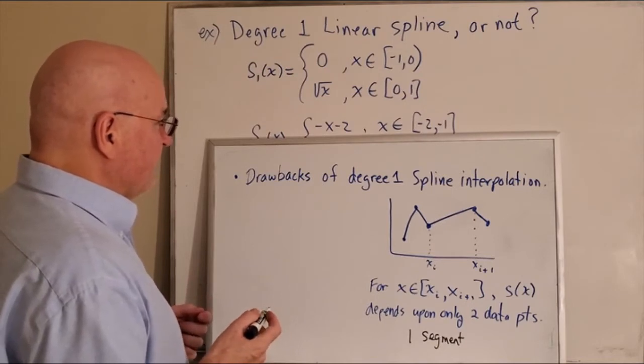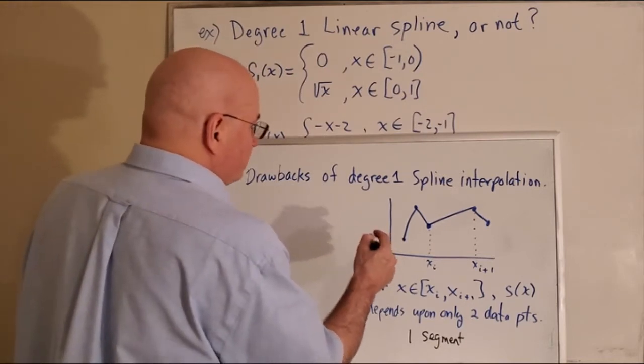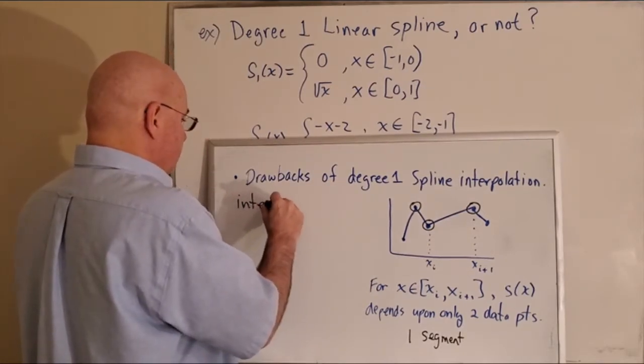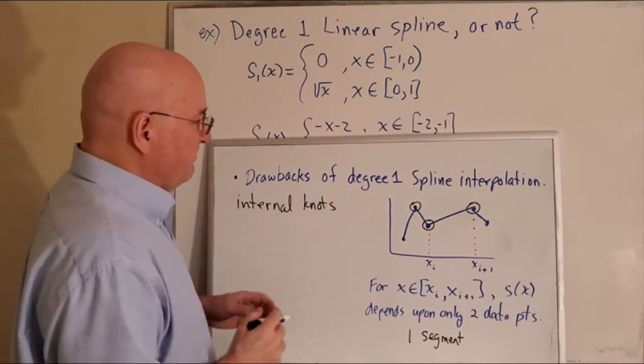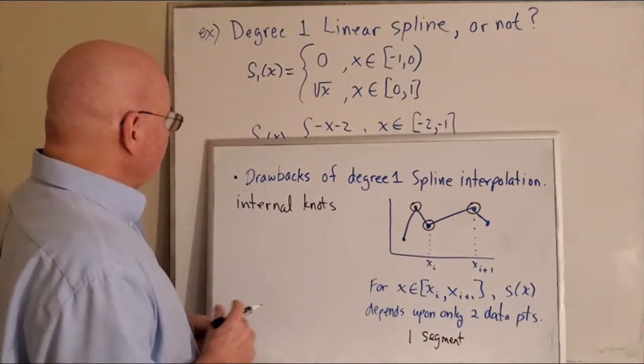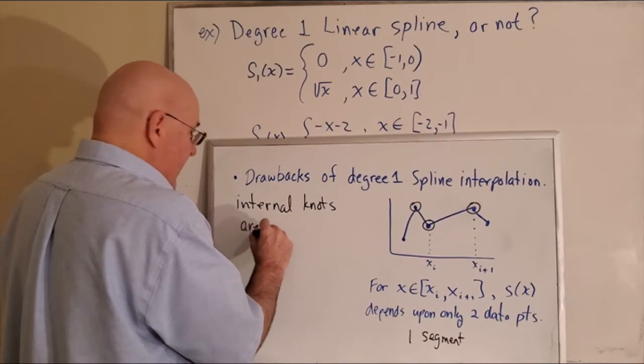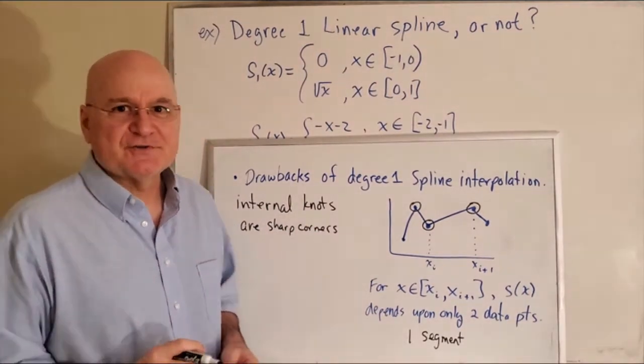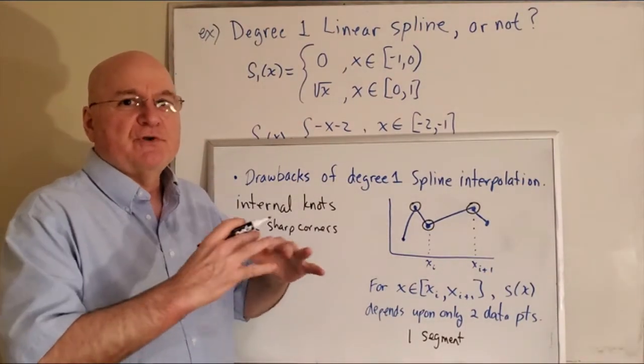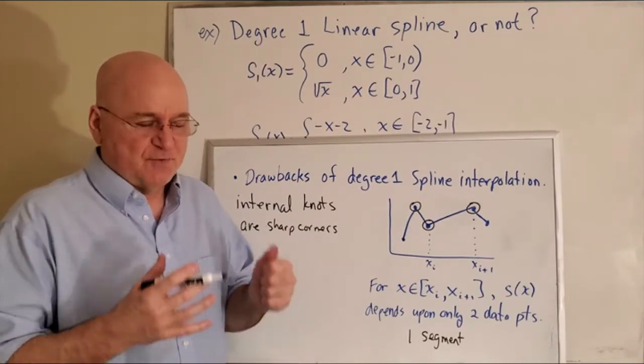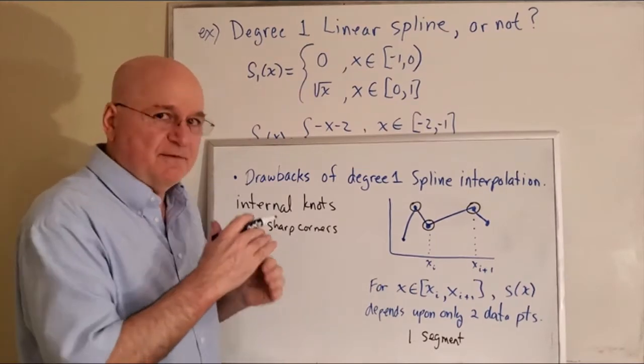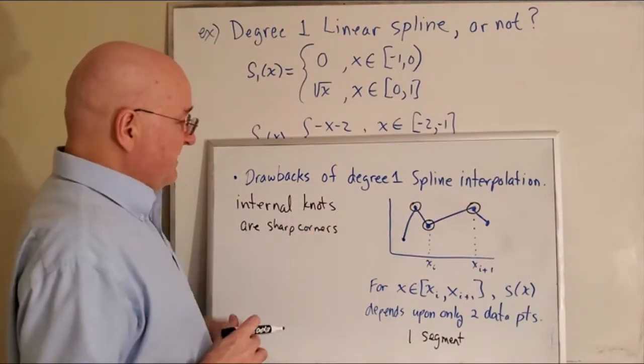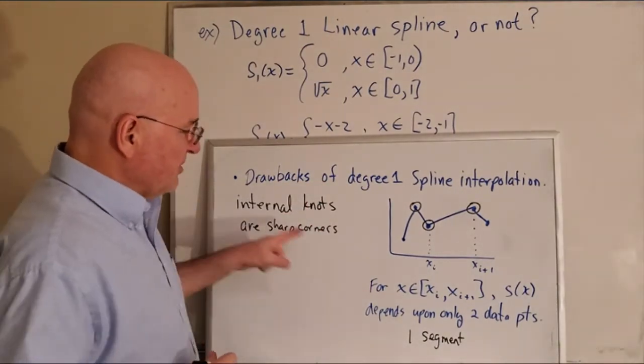And then another drawback is that all these points we call knots, the internal knots - meaning we're excluding the first one and the last one - the internal knots have sharp corners. What does that mean? Usually sharp corners means it's not a smooth curve and it's not a differentiable curve. In life we love to work with differentiable functions; they're the nicest ones to work with and I think those types of functions provide the best possible estimates. The advantage is it's very simple to implement as you saw in the very short pseudocode, but these are two considerable drawbacks.